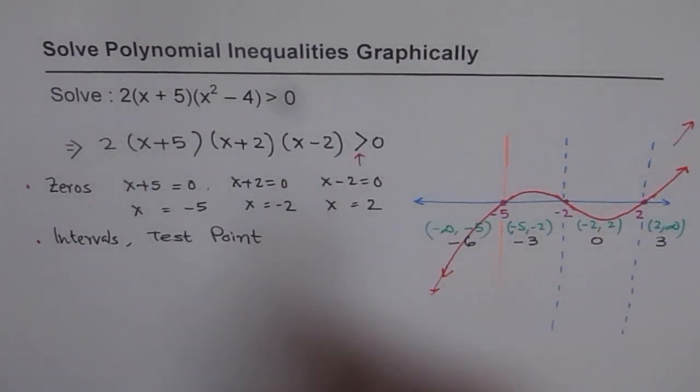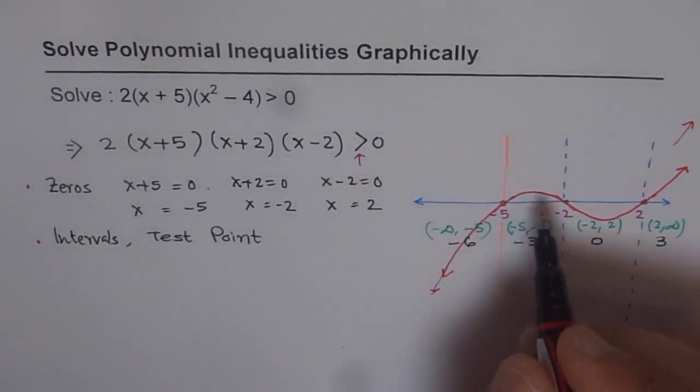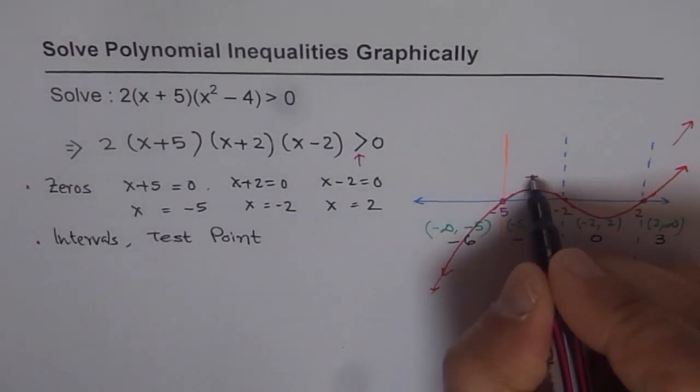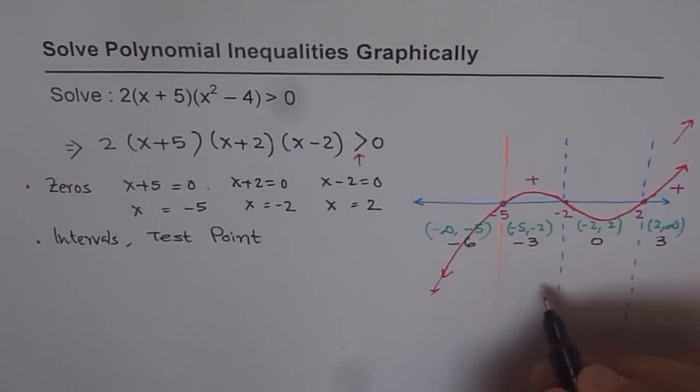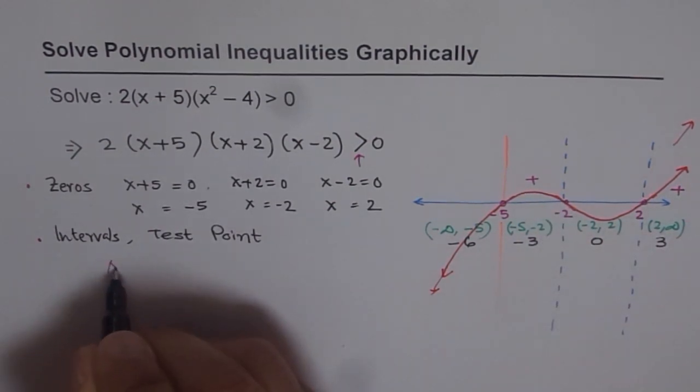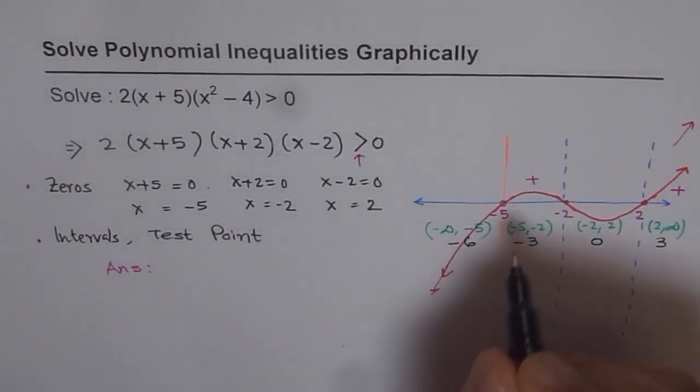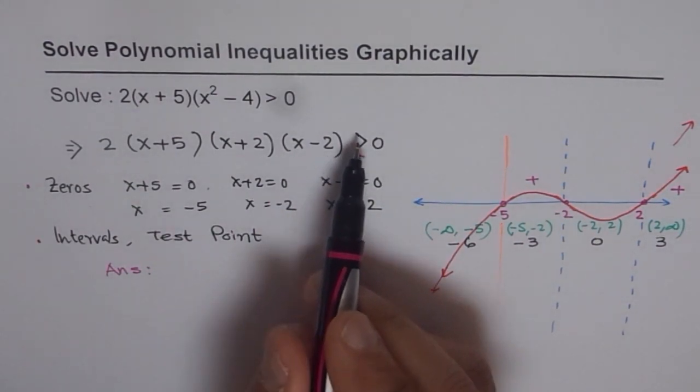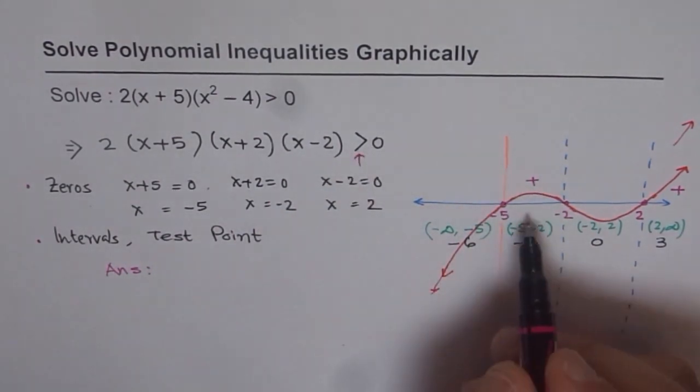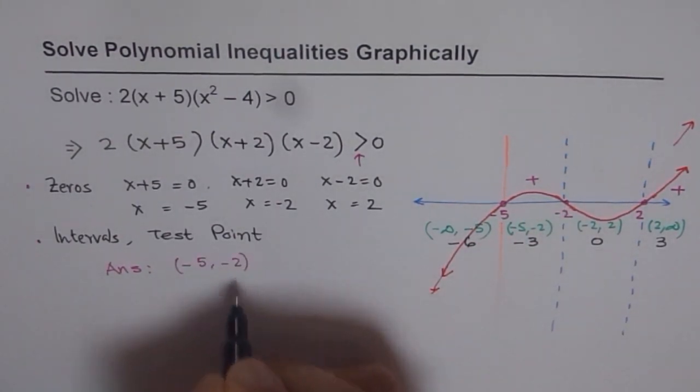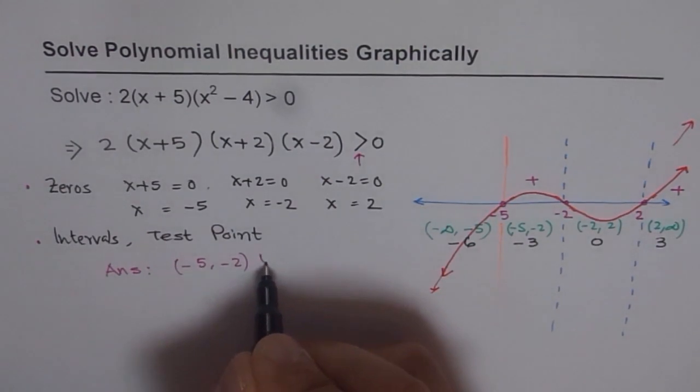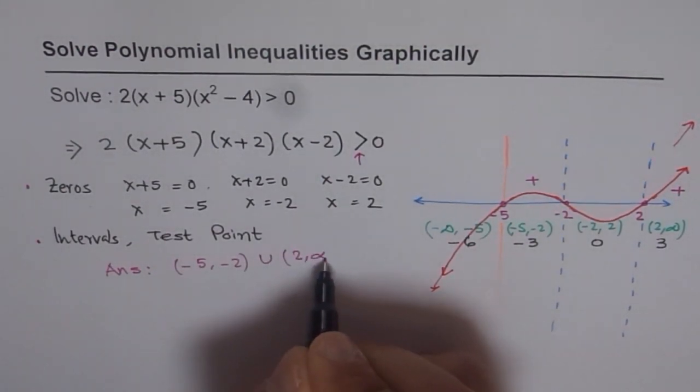Now you need greater than 0. That means what? Greater than 0 means regions where it is positive. So this is positive here and positive here. So these are the two. So that forms the solution. That is our solution set. So our answer is, we can write down answer straight away and the answer is, this function is greater than 0 in the interval from minus 5 to minus 2 and beyond 2. That is union 2 to infinity. So that is our answer.